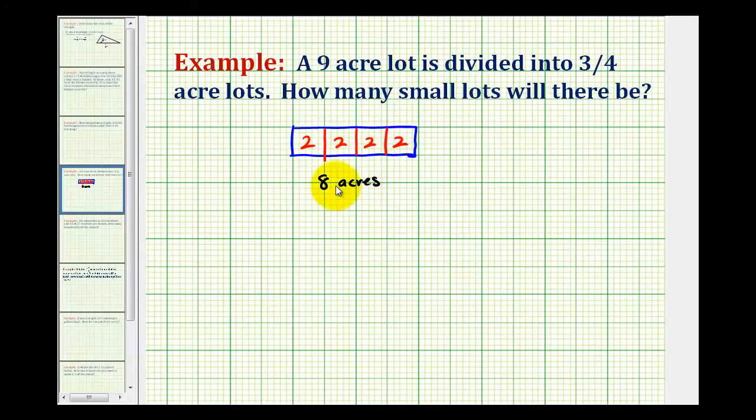So mathematically what we're doing is we're taking the total of eight acres and dividing it by the size of the smaller lots, in this case two, giving us a total of four two acre lots.